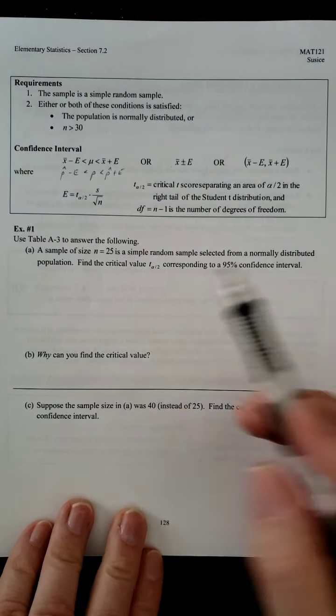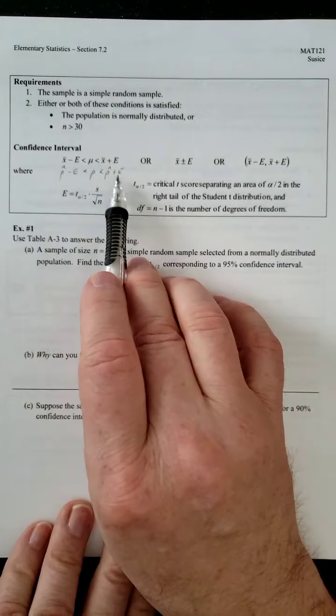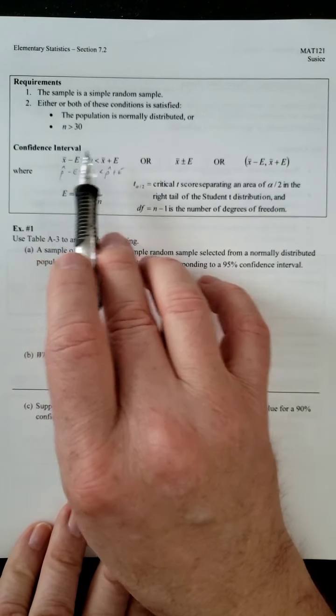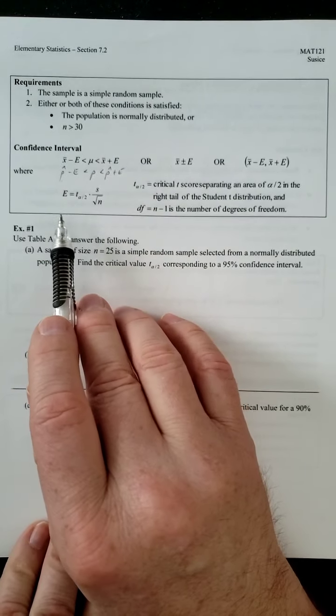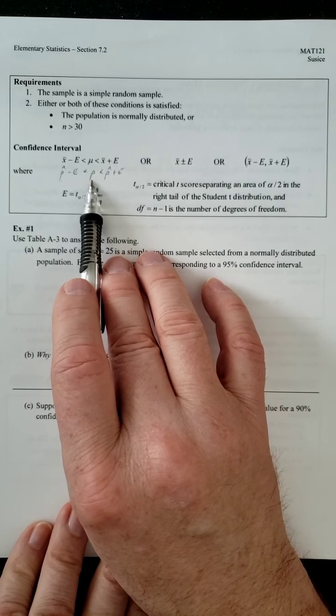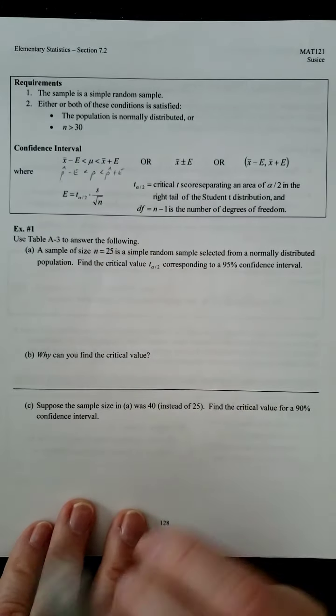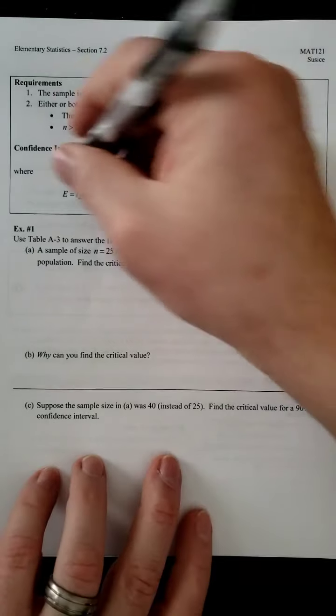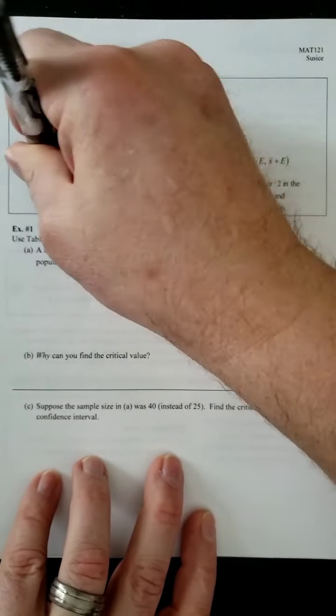Before, remember, it was P hat minus E. And then we had P in the middle and P hat plus E. It's very similar. But instead of having our sample stuff on the outside, we have our sample means on the outside. Instead of having our population proportion in the middle, we have our population mean in the middle. So it's really very similar.